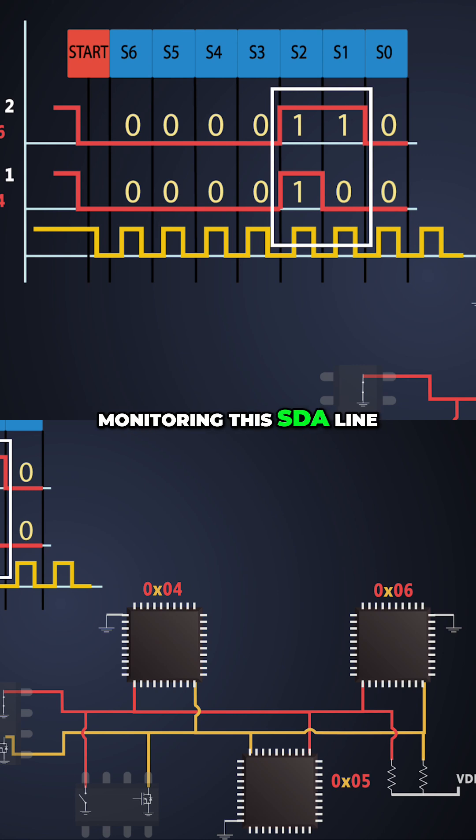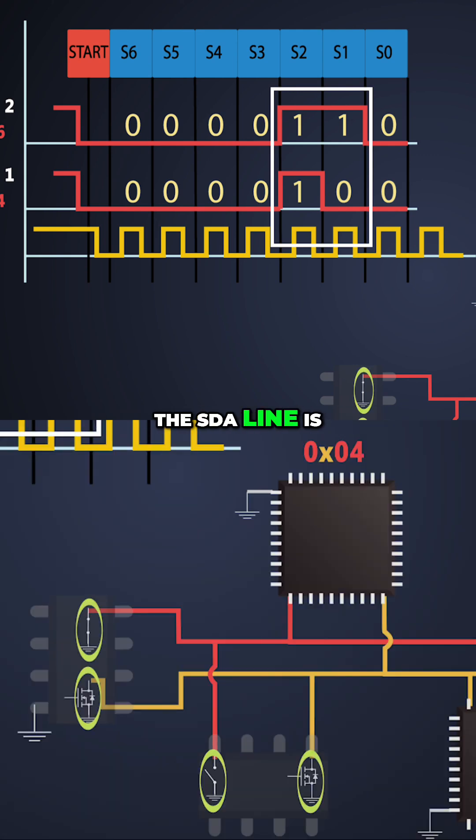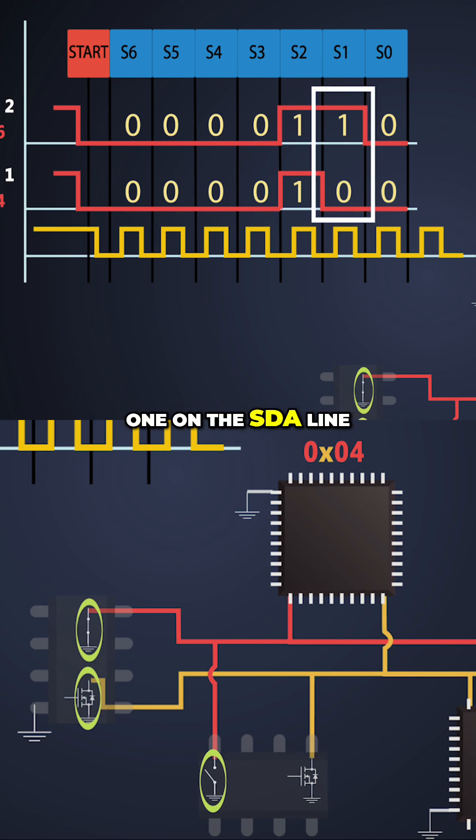Both masters are monitoring this SDA line. The SDA line is connected to the open drain configuration of the devices. Now Master 2 sends one on the SDA line.